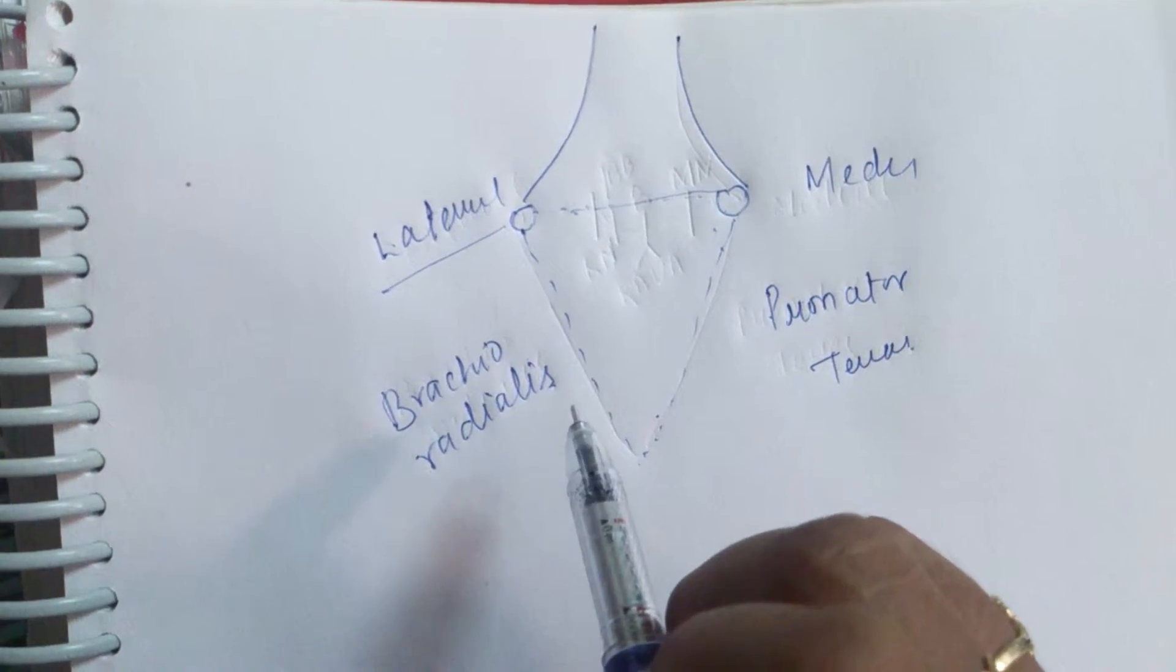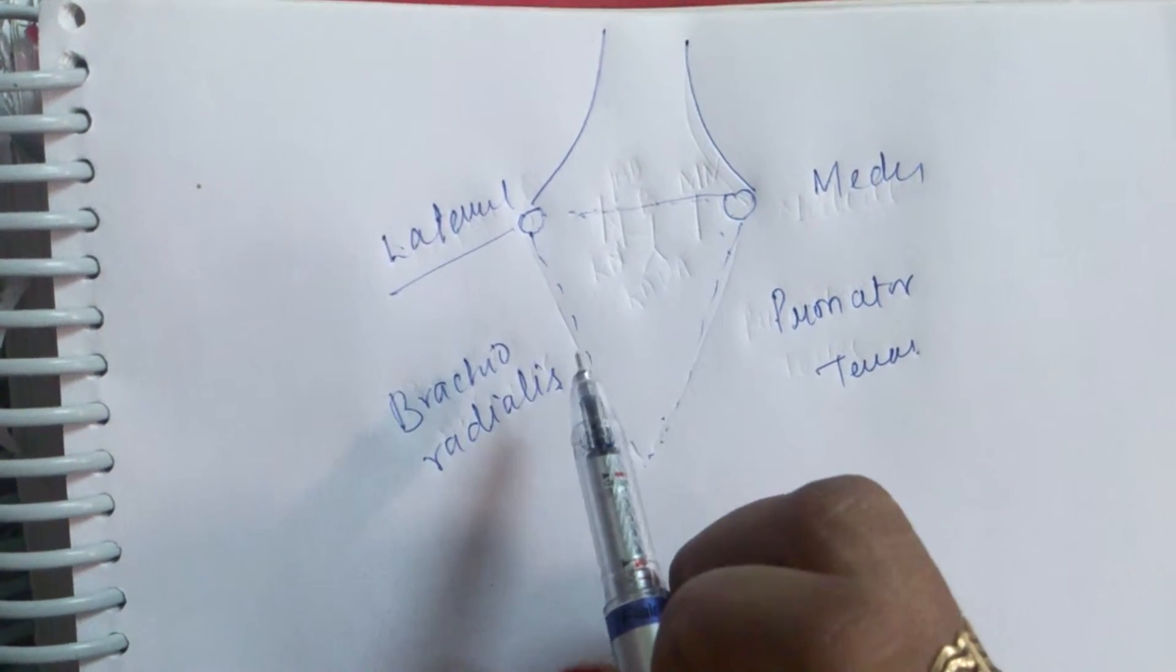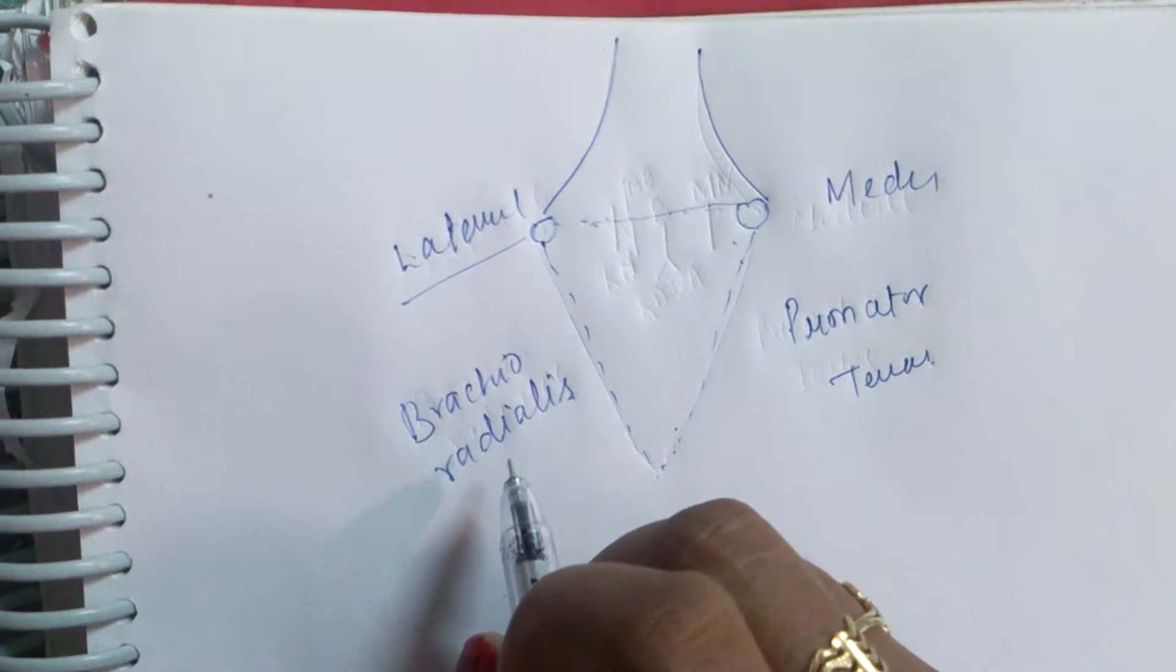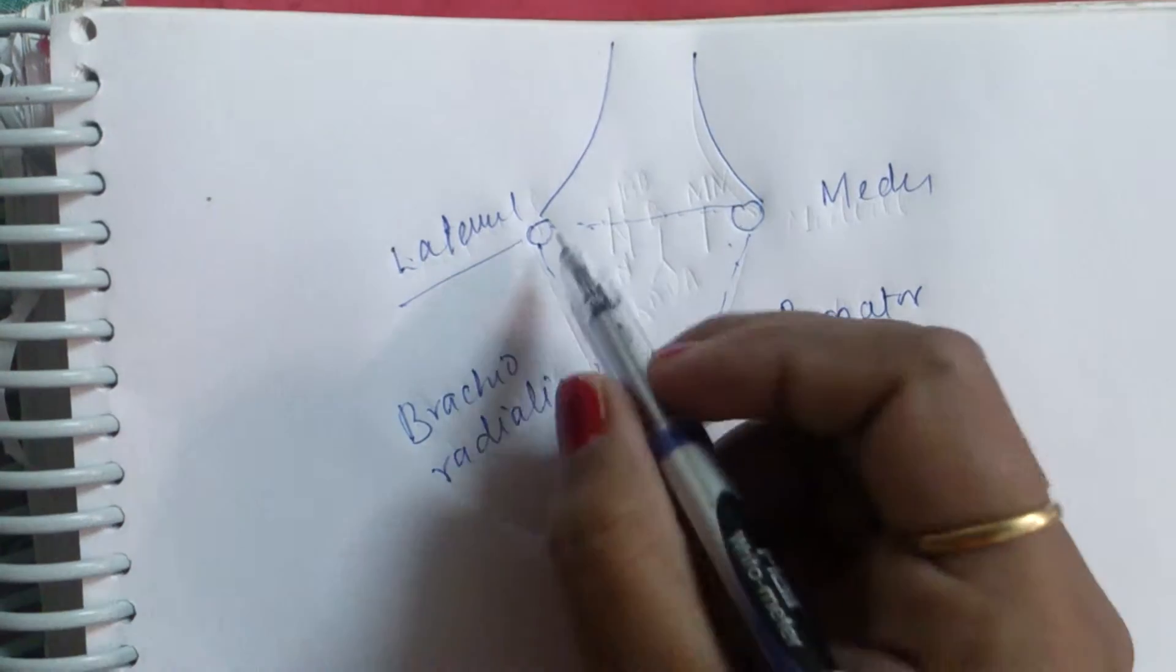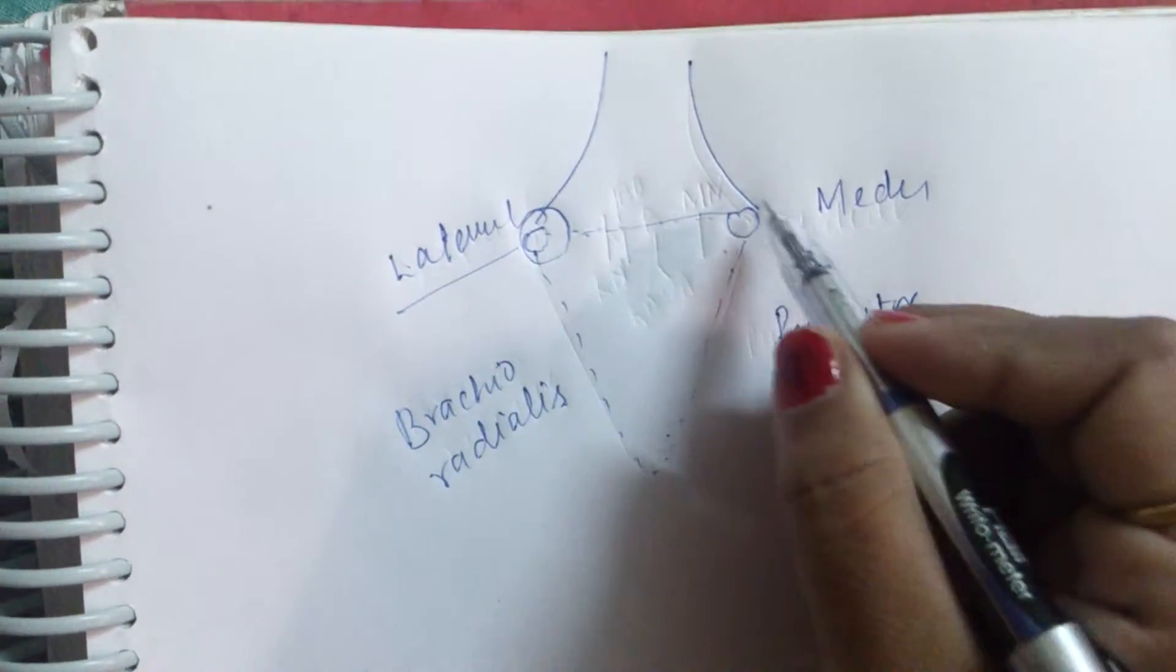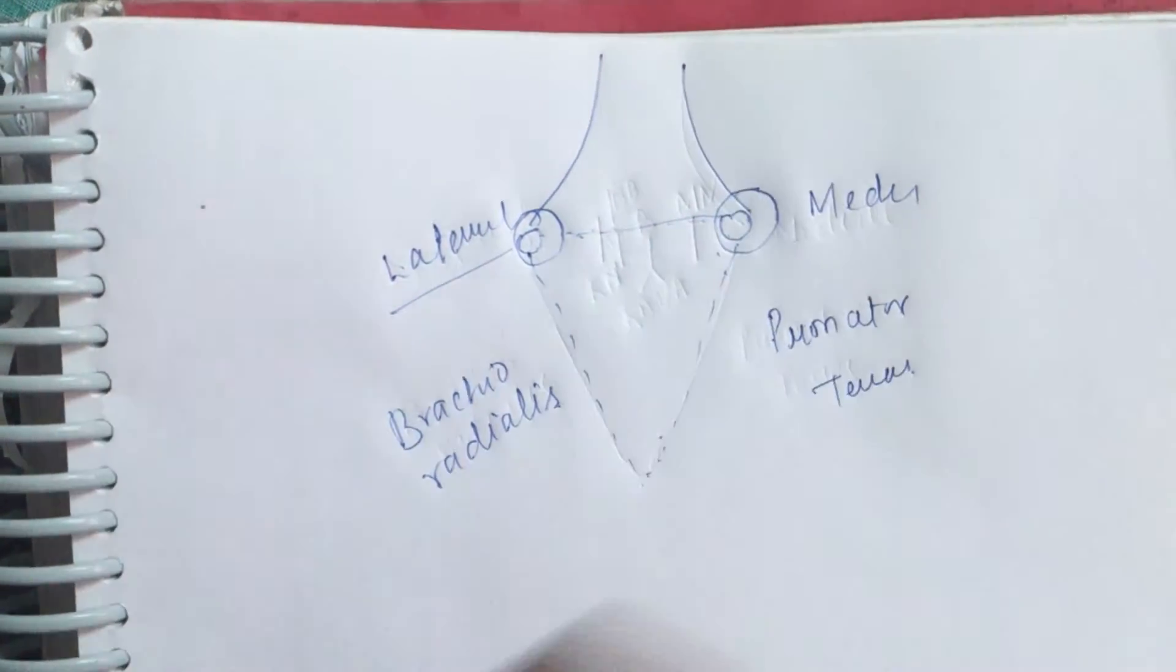The base of the cubital fossa directed upwards and is represented by the imaginary line, the front of two epicondyle of the humerus. One is the lateral epicondyle and one is the medial epicondyle.